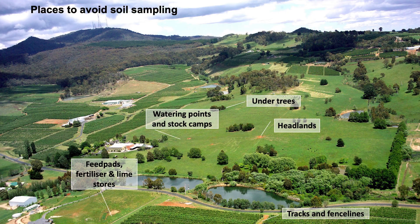No matter what sampling pattern and depth you use, there are certain spots you should normally avoid when taking soil samples, as the soil conditions are atypical and will bias the results. For example, a stock camp could be expected to have a higher concentration of nutrients than the rest of the paddock or zone. Other areas to avoid are headlands, tracks, watering points, manure patches, gateways, fence lines, old fertilizer or lime dumps and directly under drippers. Make a note of areas to avoid before you set out to collect samples.